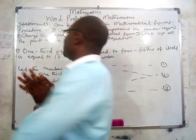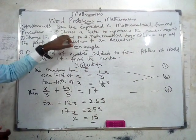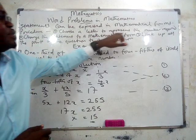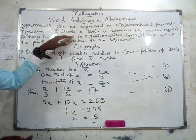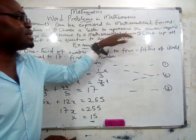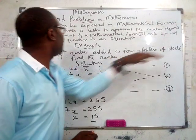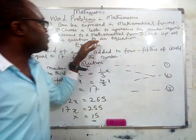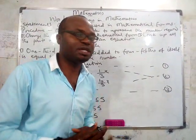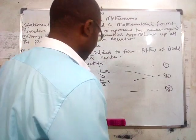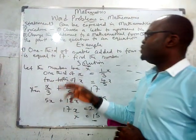What are the procedures involved in solving a word problem? First, you choose a letter to represent the number required. Second, you change the statement to mathematical form. Then you link up all the parts of the question into an equation and solve. We're going to be demonstrating this with an example.